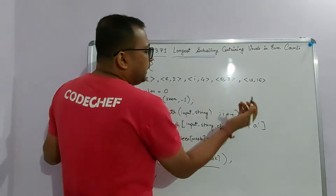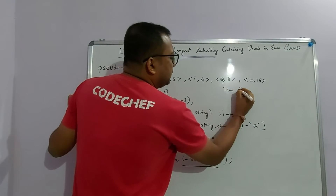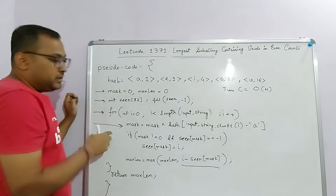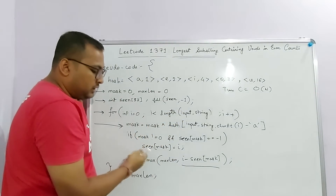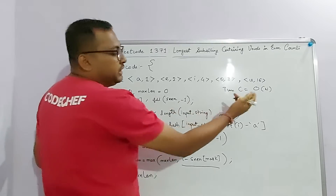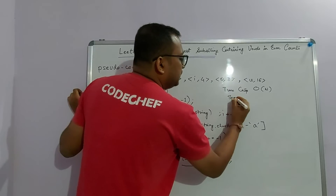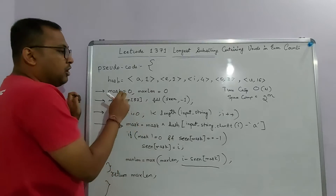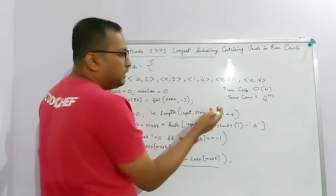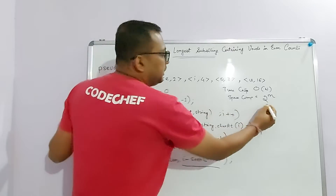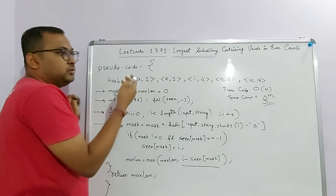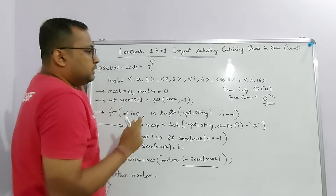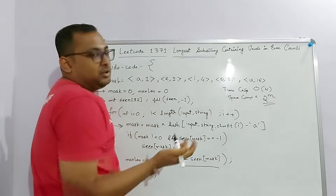The time complexity is O(N) where N is the length of the string, since we iterate over the string once and do constant-time XOR and array lookups. The space complexity is O(2^M) where M is the number of vowels — here M = 5, so we have 32 states. If you needed to track more characters for even/odd parity, M would increase accordingly.